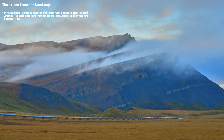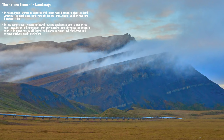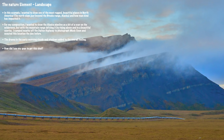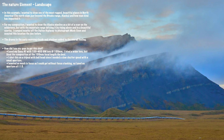This is an example of using the nature element in landscape. In this image I wanted to show one of the most rugged, beautiful places in North America — the North Slope just beyond the Brooks Range in Alaska — and how mankind has impacted it. For my composition I wanted to show the pipeline as a bit of a scar on the wilderness, but I wanted to clearly show the mountain range defying that scar and rising above it in a beautiful sunrise. I had camped nearby off the Dalton Highway for a few days while photographing musk oxen, scouted this location the day before, and the drama in the early morning clouds and shadows added to the overall feeling.